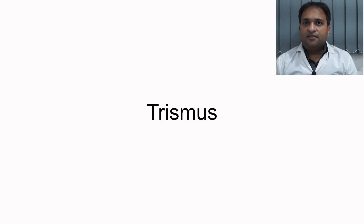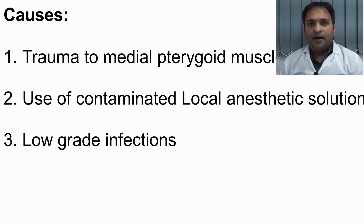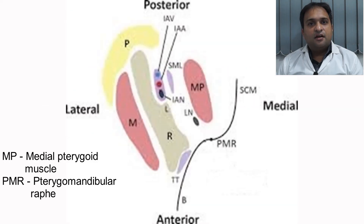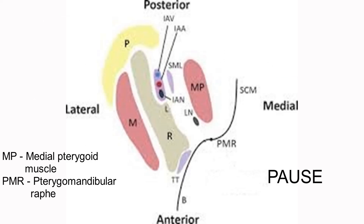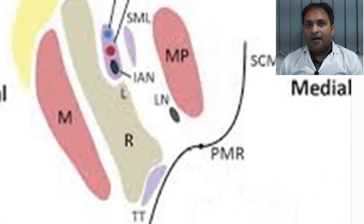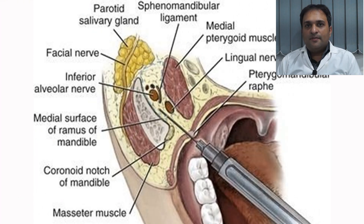The next complication is trismus, with onset about 1–6 days post-treatment. Causes include trauma to the medial pterygoid muscle during injection, local anesthetic solution contaminated by alcohol or cold sterilizing solution producing muscle irritation, and low-grade infections. The anterior border of the medial pterygoid muscle is medial to the pterygomandibular raphe; entering the needle lateral to the raphe ensures you remain lateral to the muscle and prevent injury.